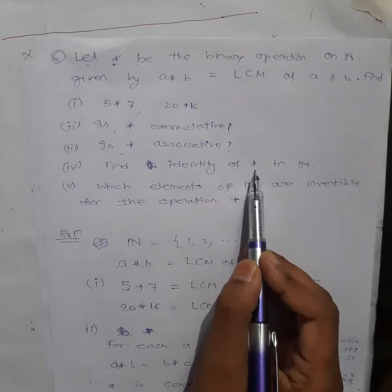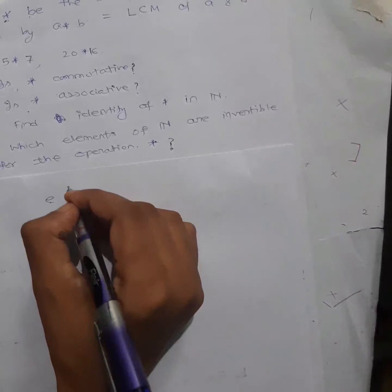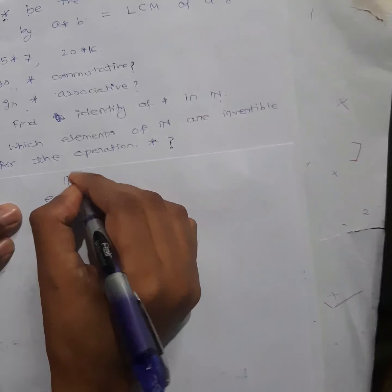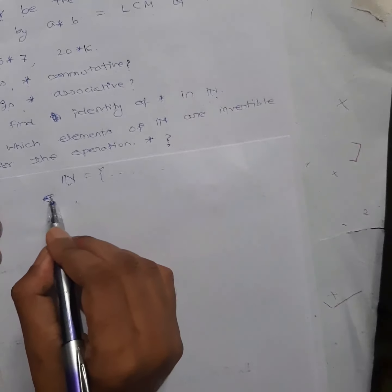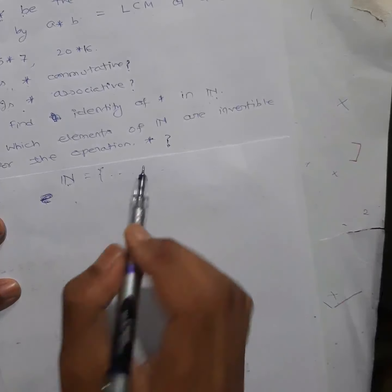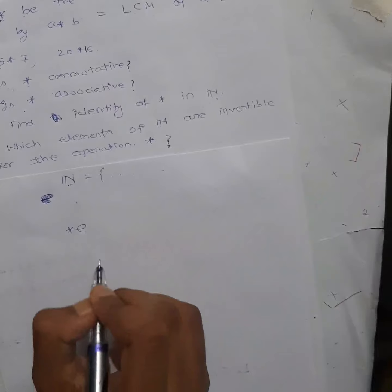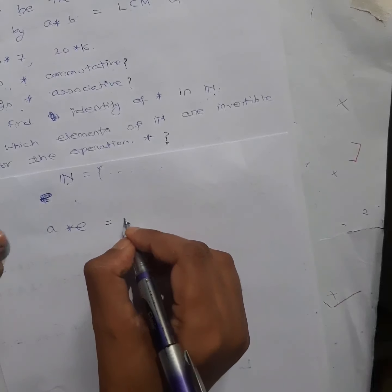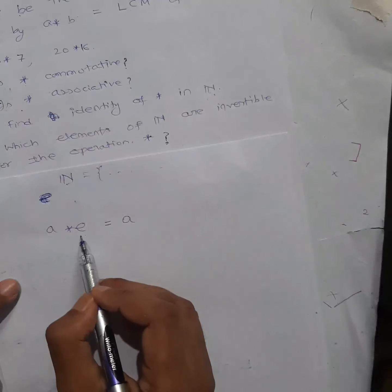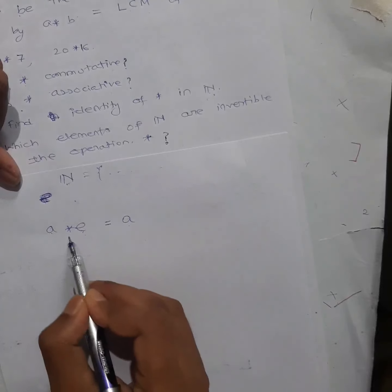Question number 4: find the identity of ★ in the set of natural numbers. First thing — identity: remember, identity is one element from the set. This time the set is the set of natural numbers. From this set I will find one element. The identity is that element which, when you do operation with any other element from the set, gives back that element.